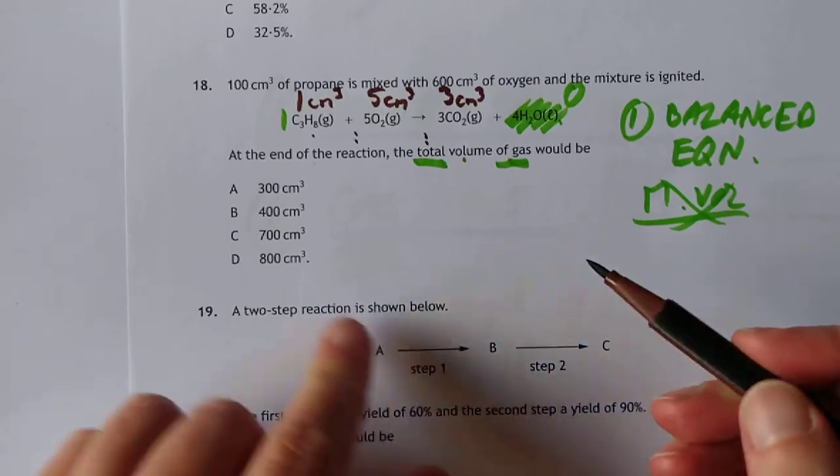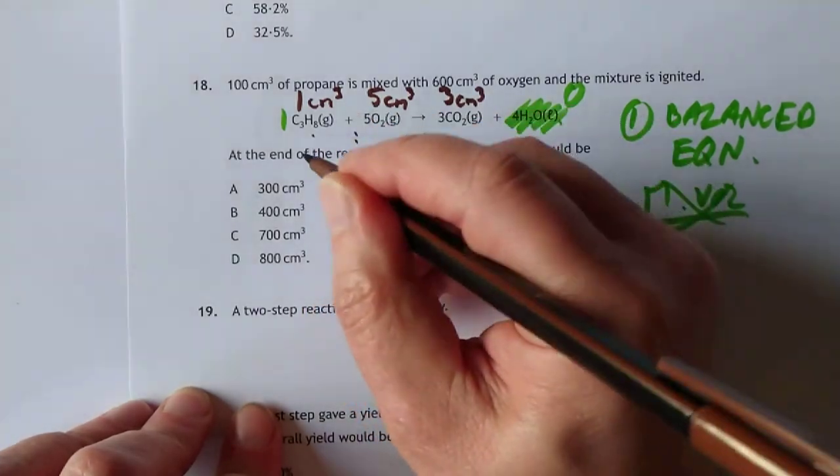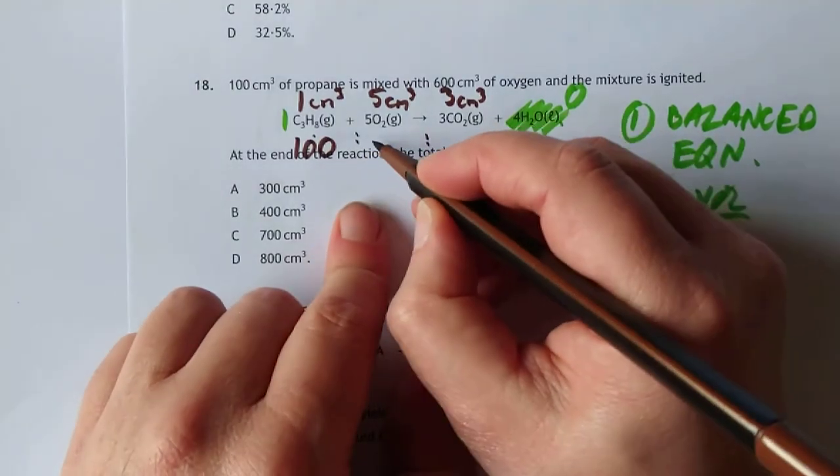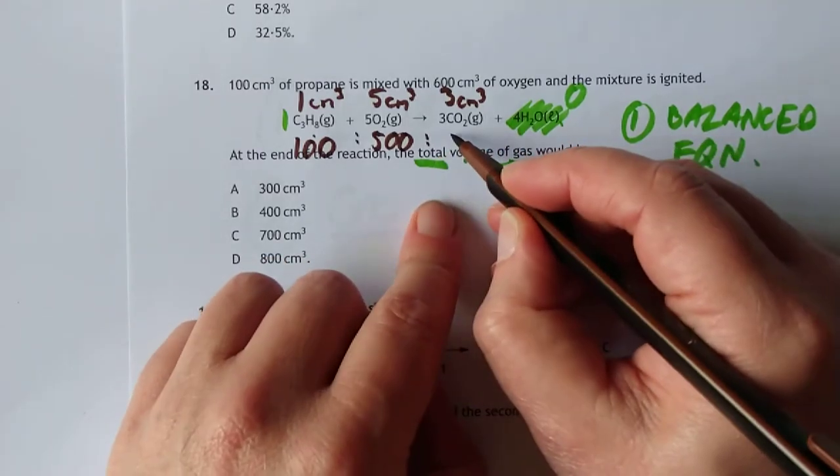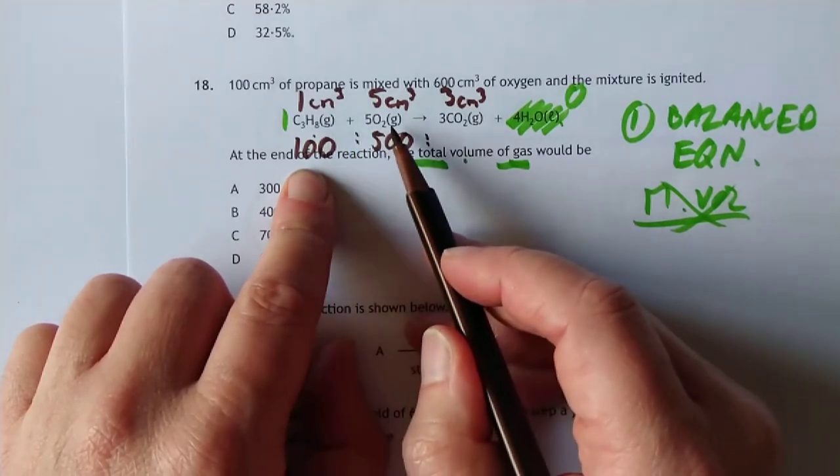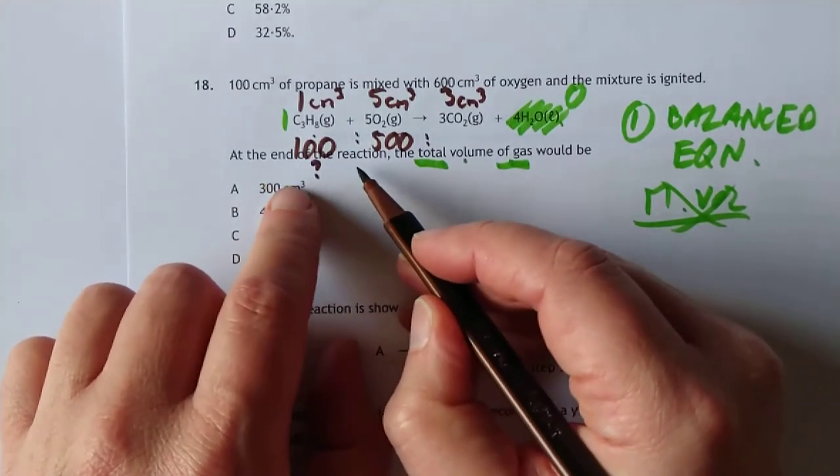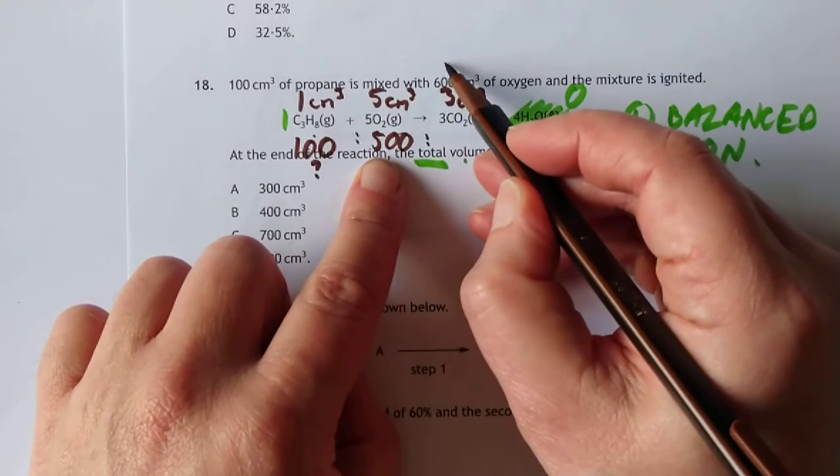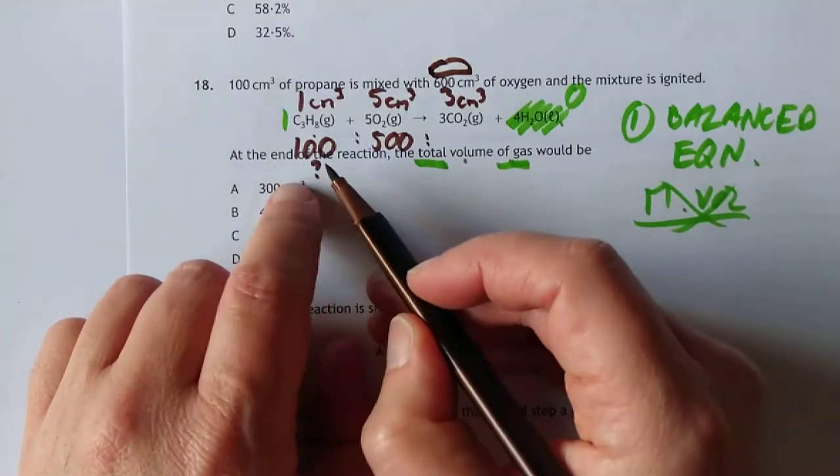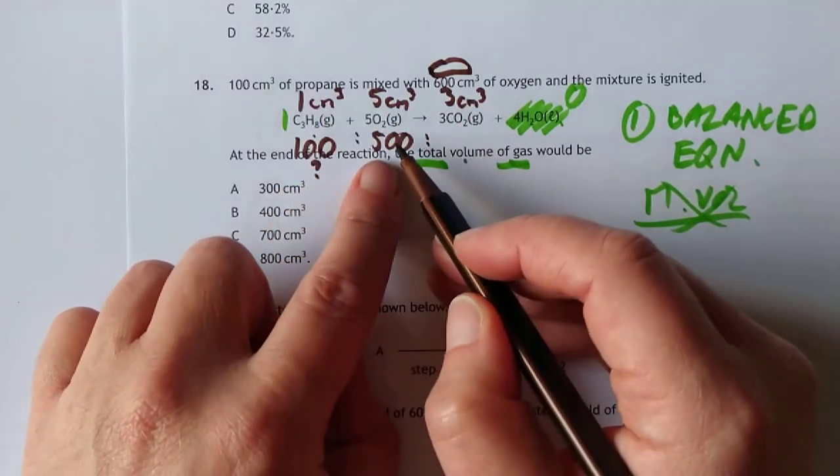1 to 5 to 3. We don't have one of this, we have 100 of this. So we've actually got 100 of this, which will react with 500 of this. We should check, which of these two is the limiting chemical? If you wanted to burn all of that 100, you would require 500 of this. Do we have 500? Yes, we've got 600. That is all going to be burned. That is the limiting chemical. So it's 100 to 500 to 300.